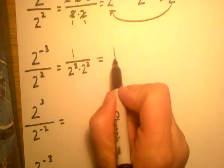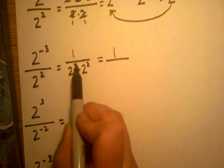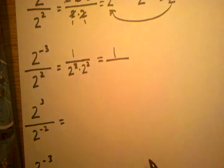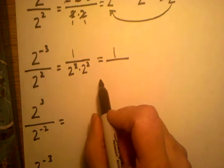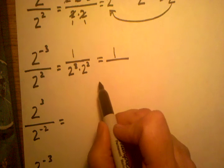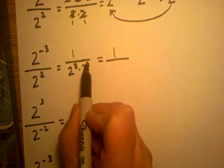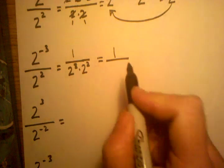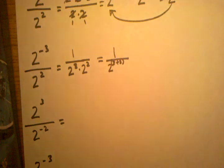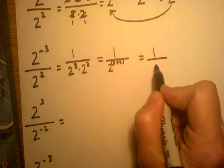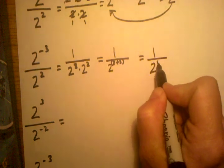So 2 to the negative third power is the same thing as 1 over 2 to the third power, and we already have 2 to the second power in the denominator. Now I can see that I have 2 to the third times 2 to the second power in the denominator, and I want to use the trick for multiplying exponents with the same base — just add the exponents — giving 2 to the 3 plus 2, which is 1 over 2 to the fifth power.